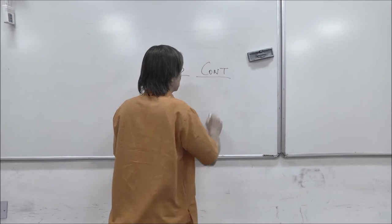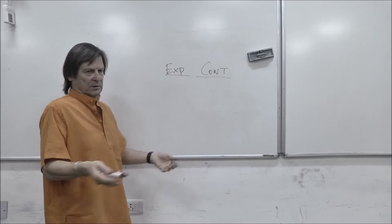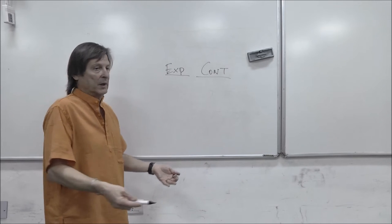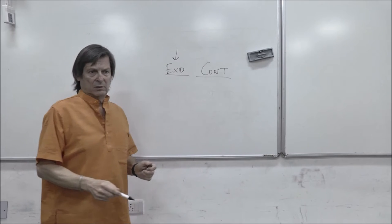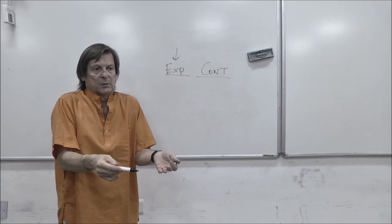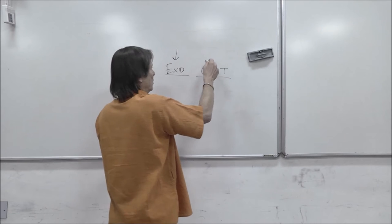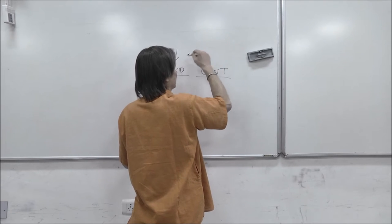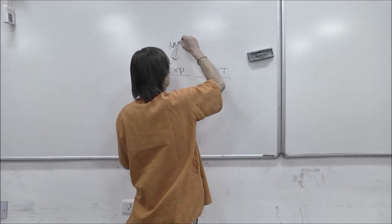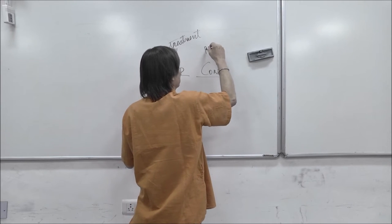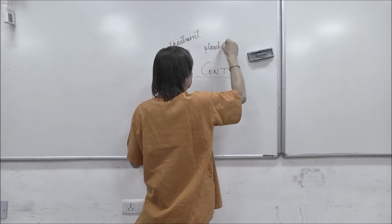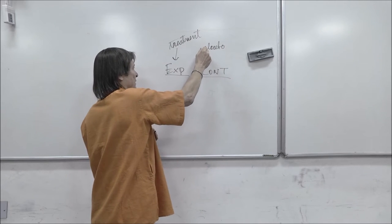And typically, if we're trying to do a treatment, we give the experimental group something. We want to control for the idea that we've given this group something special, and of course, the control group then must get something equivalent to this treatment, and we call that the placebo group often, if it's a treatment.